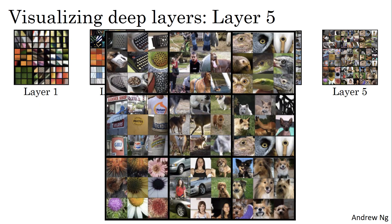Layer five is detecting even more sophisticated things. There's also a neuron that seems to be a dog detector, but the set of dogs it detects here seems to be more varied. Another unit seems to be detecting keyboards and things with keyboard-like texture — lots of dots against a background. One neuron here may be detecting text, though it's always hard to be sure. And another one here is detecting flowers.